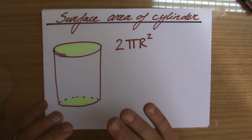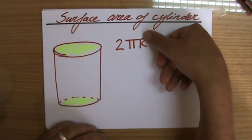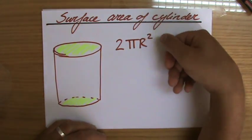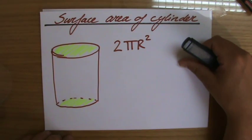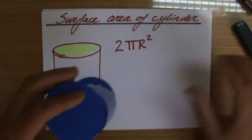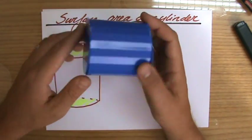Because do not confuse this with the circumference of a circle, two pi r. No, this is pi r squared, but then two of them. So two times pi r squared. That will be the top and the bottom of my cylinder.